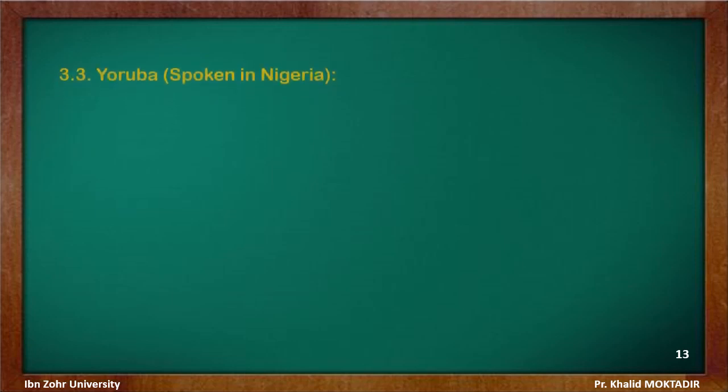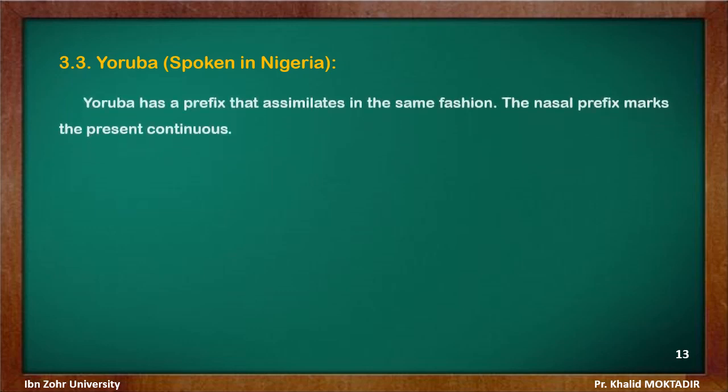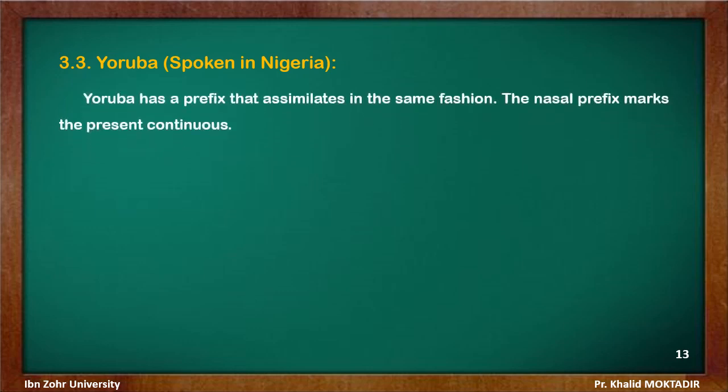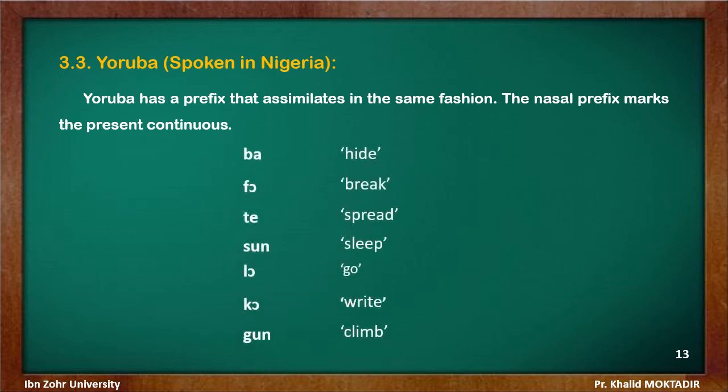The next example comes from Yoruba, a language spoken in Nigeria. In Yoruba, there is a nasal prefix marking the present continuous that assimilates the point of articulation of the first consonant in the stem. The verbs begin with: ba — bilabial; fo — labiodental; te, sun, lo — alveolar; and the last two begin with velar consonants. We expect the nasal prefix to pick up the same point of articulation as the first consonant in each verb — and that's exactly what happens.